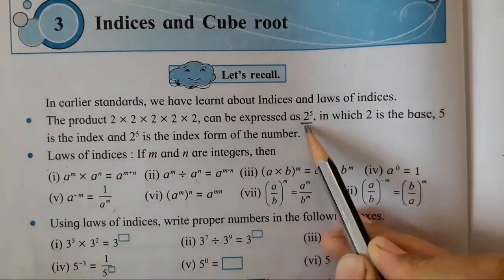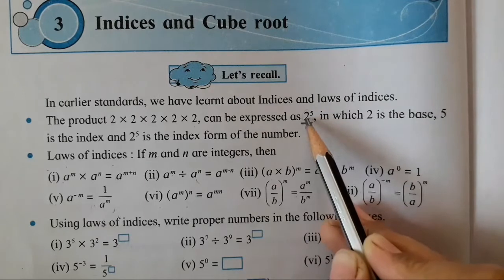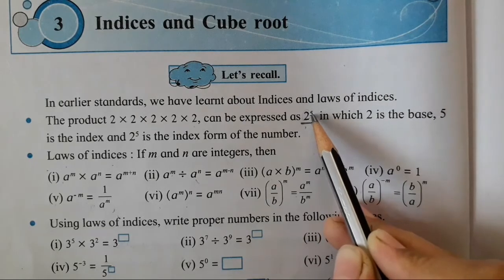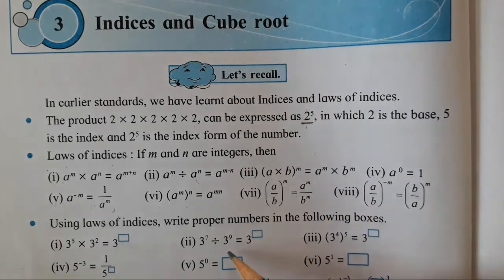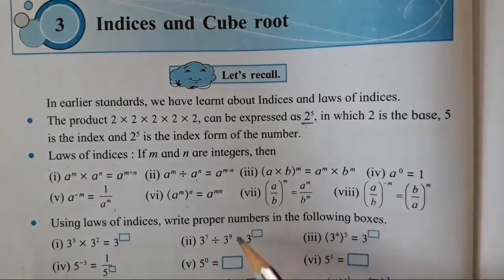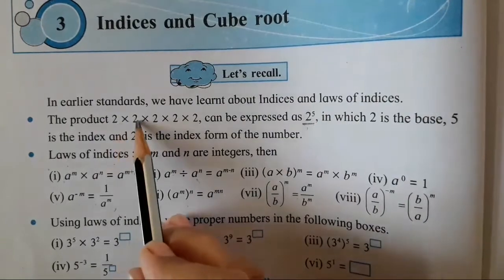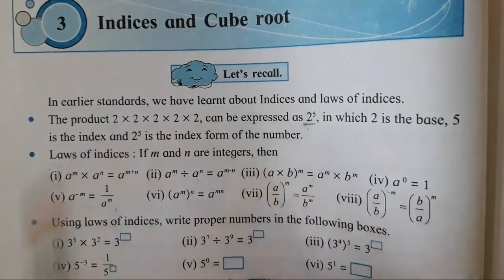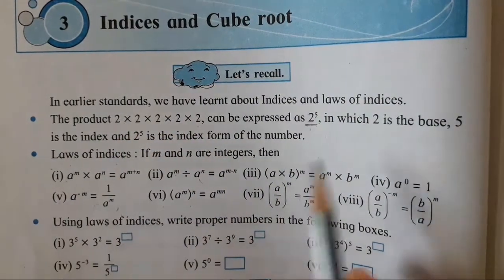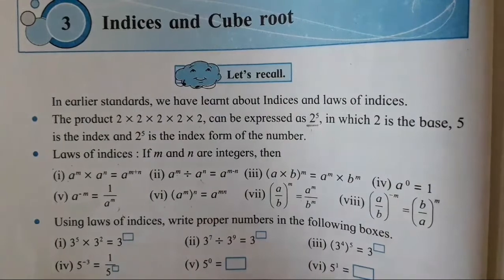When such a number is given, we call the 2 as the base and 5 as the index. We are all familiar with base and index. Why 2 to the 5? Because 2 is written 5 times. This is what we have done last to last year also.